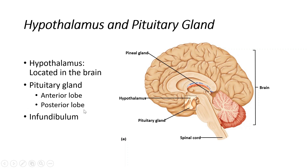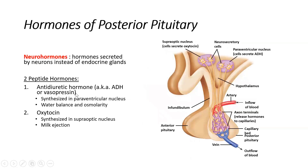The pituitary gland has two lobes: an anterior lobe and a posterior lobe. They have two completely different origins in terms of their tissue makeup and two completely different functions. Lastly, there's the infundibulum — the stalk-like connection that bridges the gap between the hypothalamus and the pituitary. The hypothalamus is on top, the pituitary is below, and they are connected via the infundibulum.